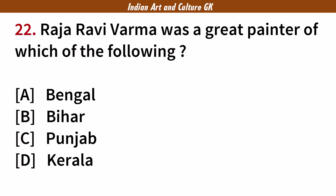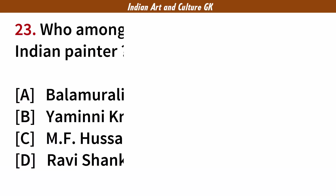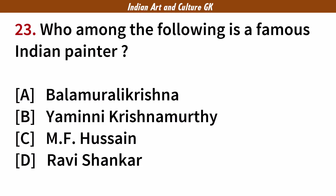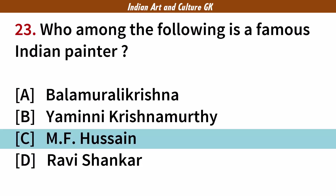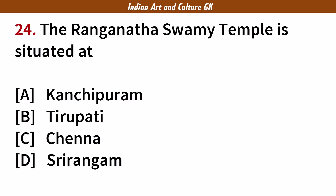Raja Ravi Verma was a great painter from which of the following? Answer: D. Kerala. Who among the following is a famous Indian painter? Answer: C. M.F. Hussain. The Ranganatha Swami temple is situated at? Answer: D. Srirangam.